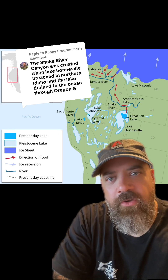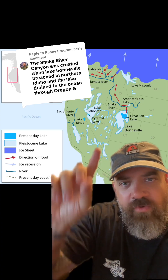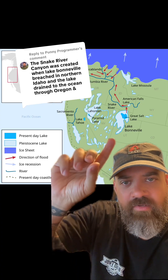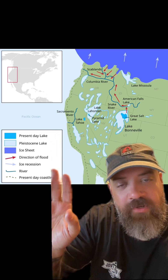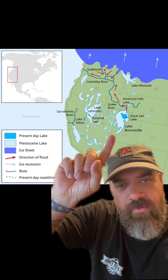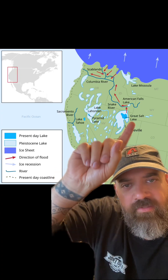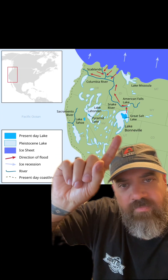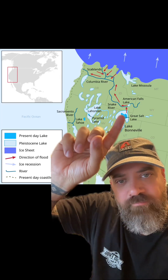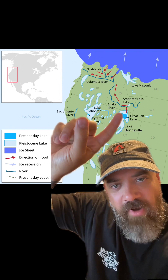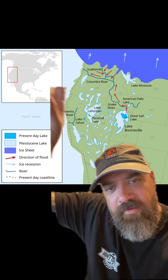You are absolutely correct. The Snake River Canyon was created when Lake Bonneville breached in northern Idaho and the lake drained into the ocean through Oregon. This is actually the path — if you don't know what we're talking about, go watch my last video where I filmed and talked about the history of Lake Bonneville and how there used to be this huge lake 30,000 years ago that burst and drained right through here, then through the Snake River all the way out into the ocean.